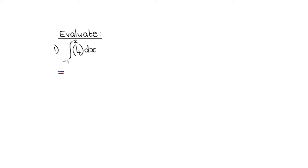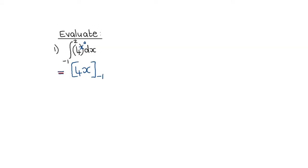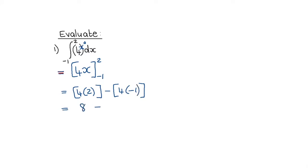In this definite integral example, I integrate to get 4x, evaluated between x = negative 1 and x = 2. Replacing with the upper limit first: 4 times 2 equals 8. Then subtracting with the lower limit: 4 times negative 1 equals negative 4. So 8 minus negative 4 gives 8 plus 4, which equals 12.